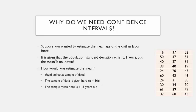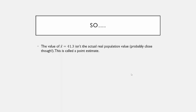You'd collect a sample of data. This sample of data is given here — there are 30 individuals in the labor force. I just randomly sampled them and asked how old they were. The average of these 30 ages of people in the civilian labor force is 41.3 years old. The value of x-bar being 41.3 isn't the actual real population value — that's probably not the real population mean, though it's probably close. There's no way that talking to 30 people gives a mean exactly equal to the real population mean age. This is called a point estimate — a single value used to estimate the value of a population parameter.